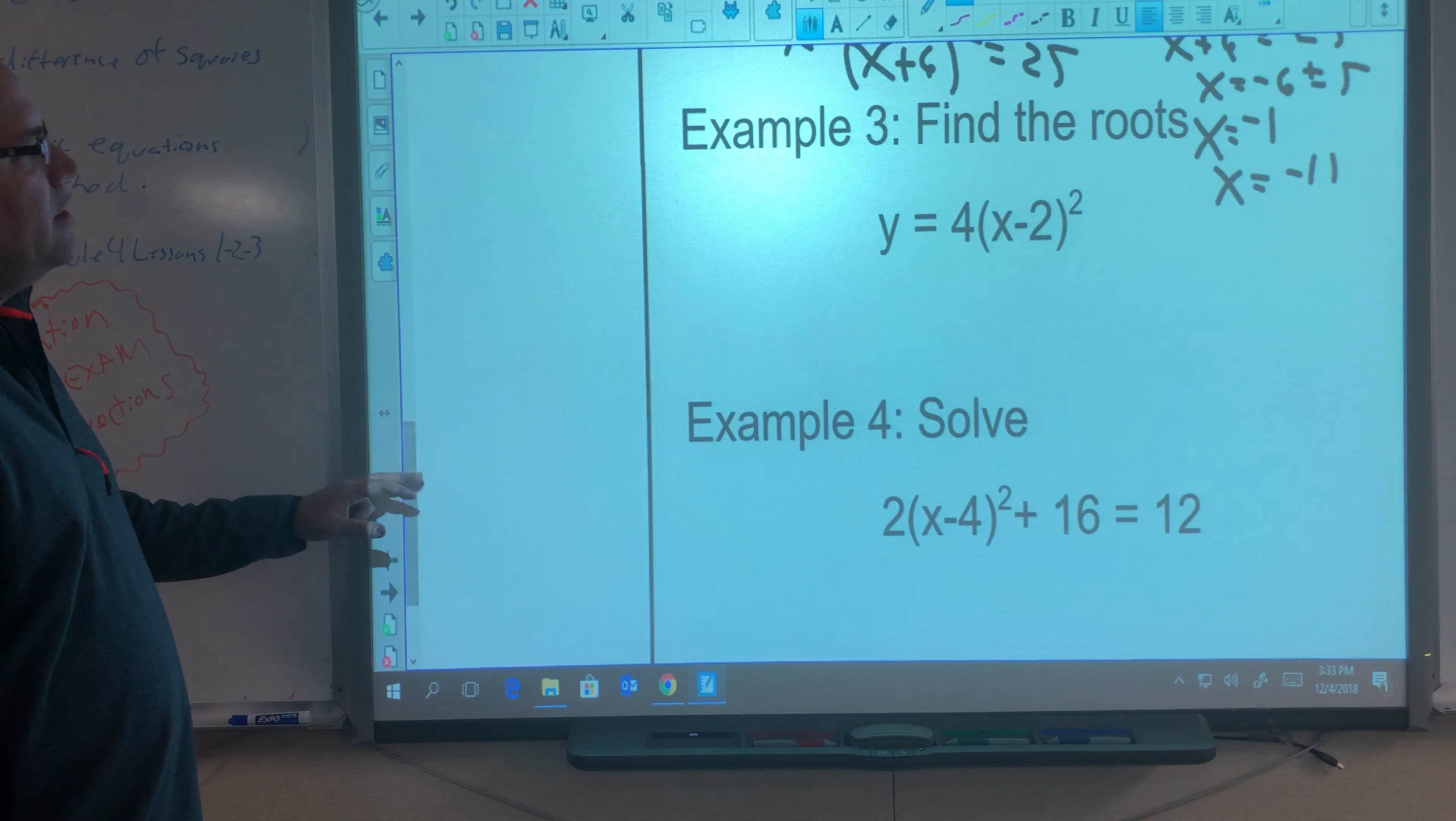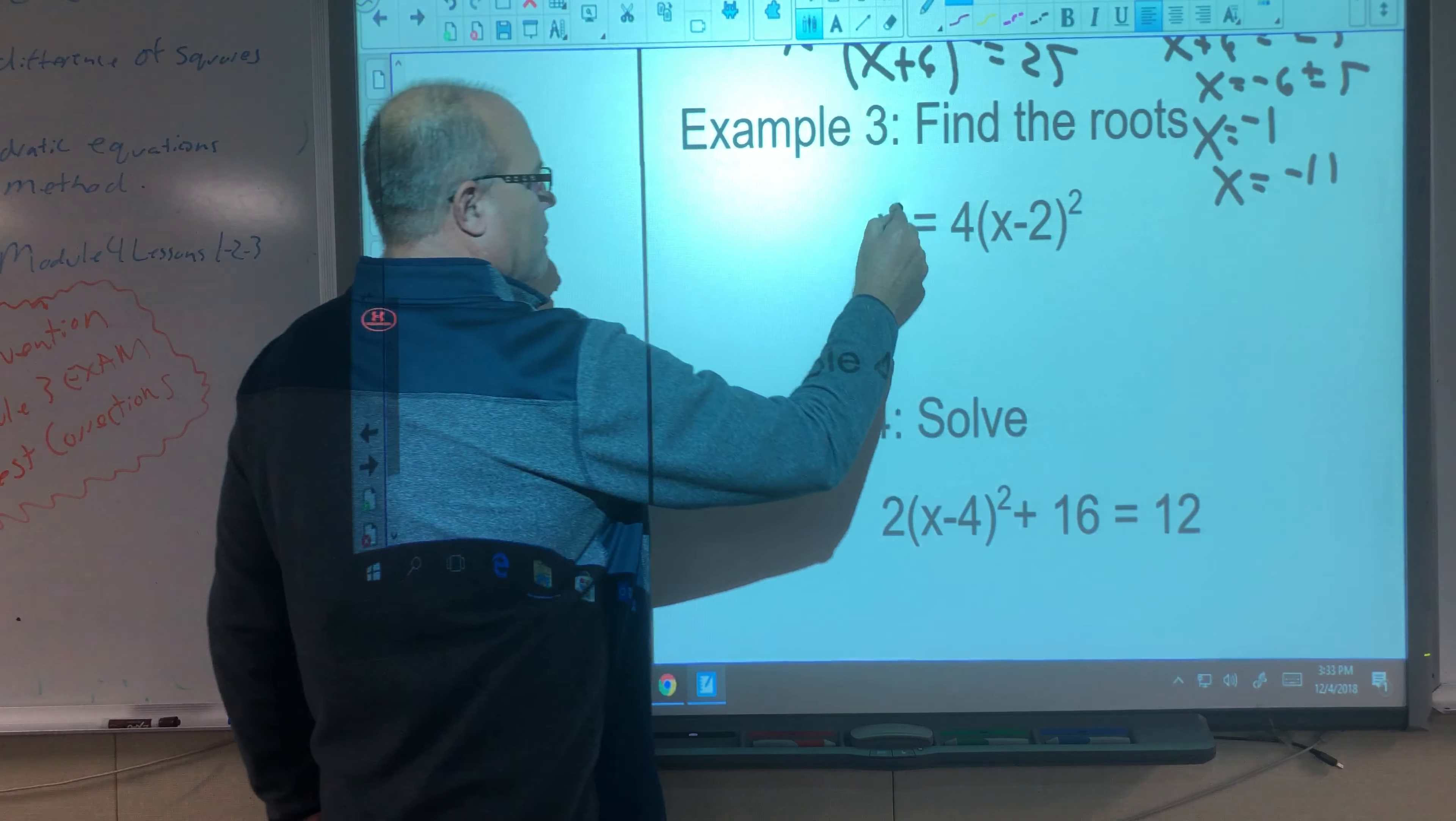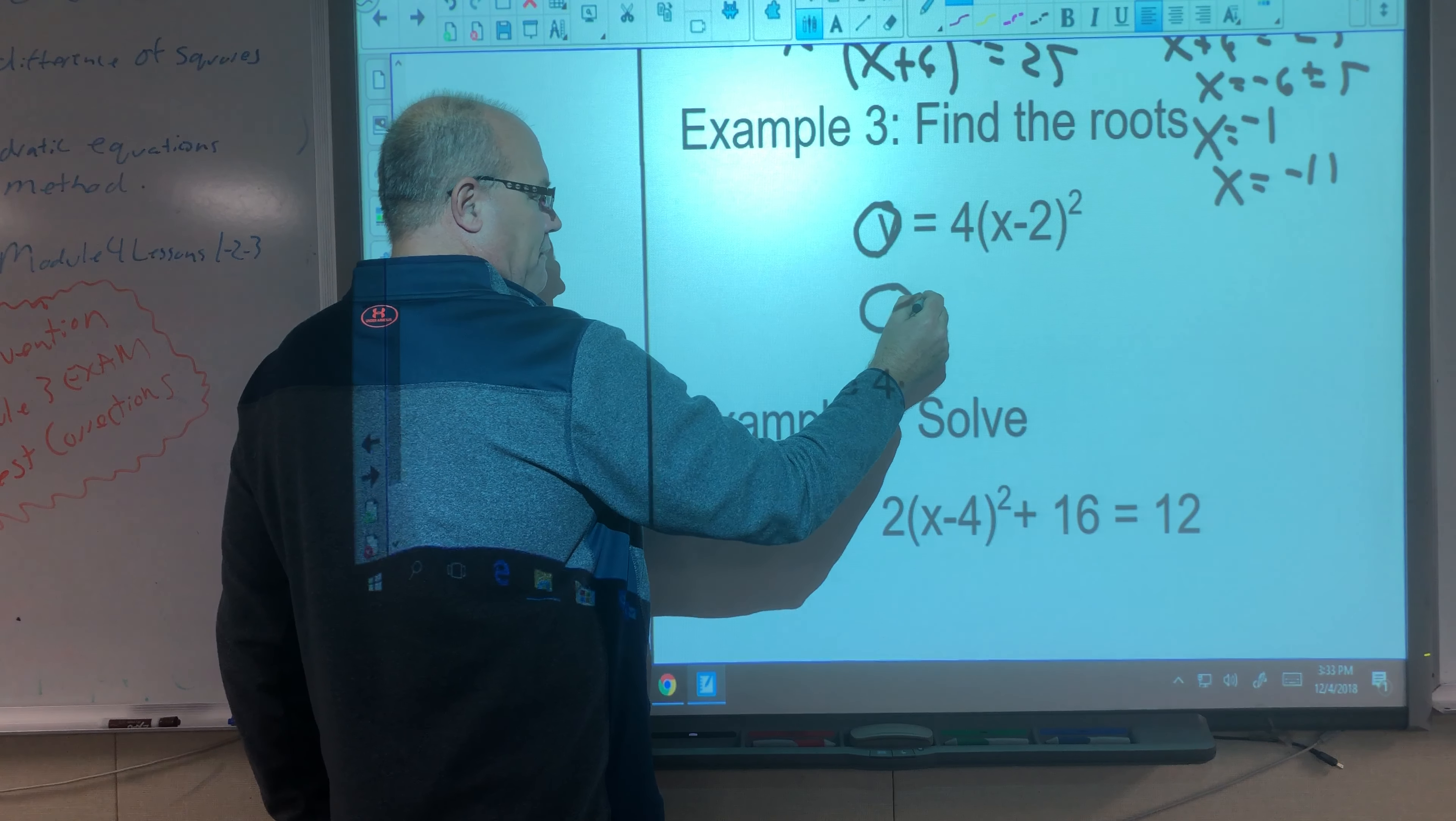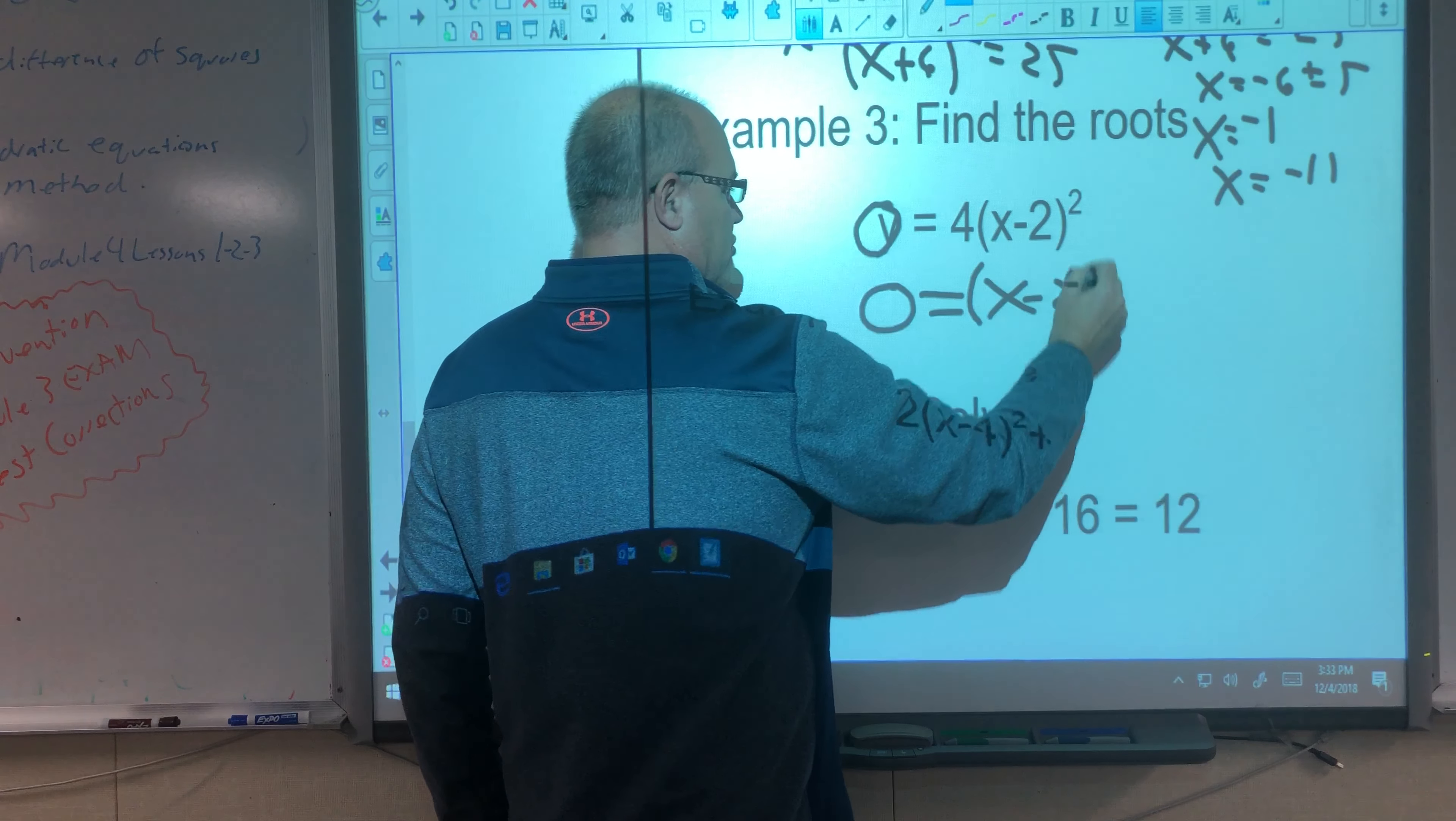Here's one. This time there's no k value. So we have 0 here. So I'm going to divide both sides by 4. When I do that, I still get 0, because 0 divided by 4 is 0, equals x minus 2 squared.